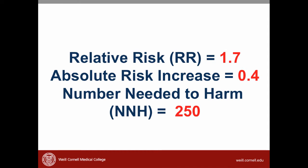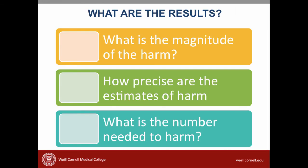To pull everything together for this article: we calculated the relative risk of acute kidney injury, which was 1.7; the absolute risk increase, which was 0.4; and the number needed to harm, which was 250. Those are all the terms I want you to know about reading articles about harm. In class we will practice appraising articles about harm and spend some time thinking about applying these results to patients.